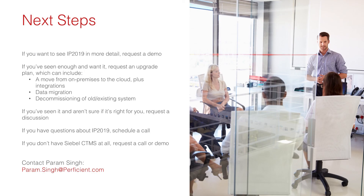If you want to learn more or see more features of the latest versions, IP 2019 — currently 19.12 — is the latest version, and version 20.1 should be released soon. If you want to see a demo or learn more about any of the latest features, please contact us at param.singh@proficient.com. Please drop us an email and we'd be very happy to help you with your implementation.